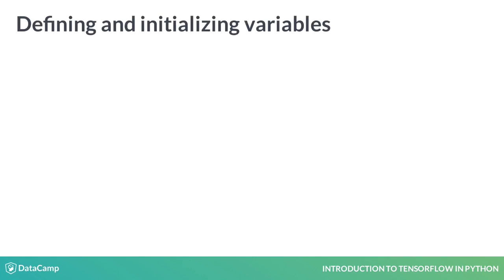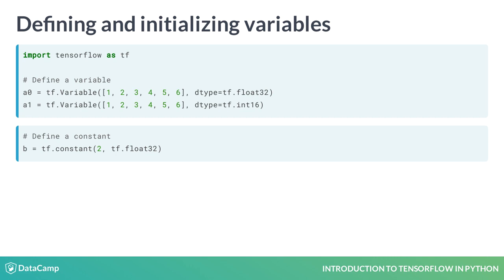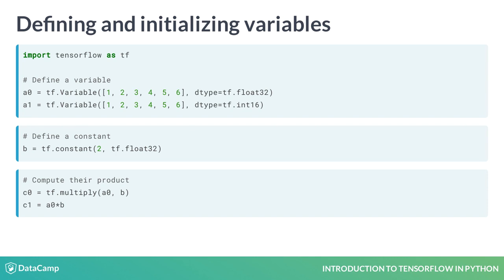Unlike a constant, a variable's value can change during computation. The value of a variable is shared, persistent, and modifiable; however, its data type and shape are fixed. In the code, we first define a variable A0, which is a one-dimensional tensor with six elements. We can set its data type to a 32-bit float or something else, such as a 16-bit int, as we have for A1. We then define a constant B and define C0 as the product of A0 and B. Note that certain TensorFlow operations, such as tf.multiply, are overloaded, which allows us to use the simpler A0 times B expression instead.